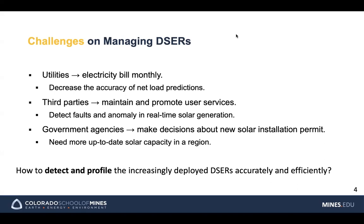Third parties need to detect false anomalies in real-time solar generation. For government agencies, they need to make decisions about new solar installation permits, so they need more up-to-date solar capacity information for a region. The fundamental question here is how to detect and profile the increasingly deployed DER accurately and efficiently.